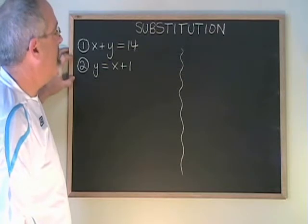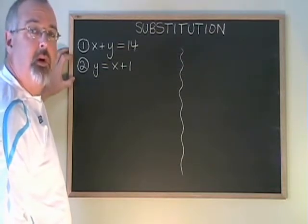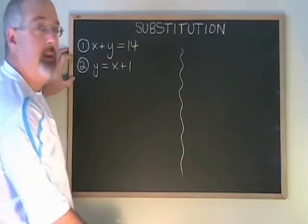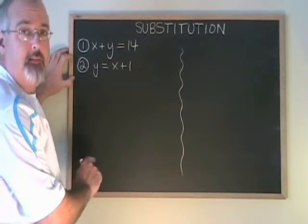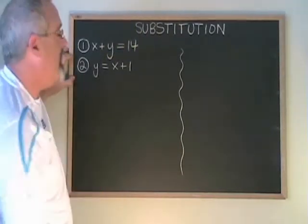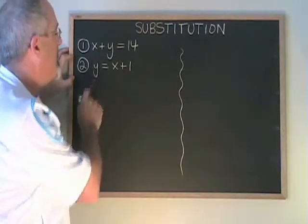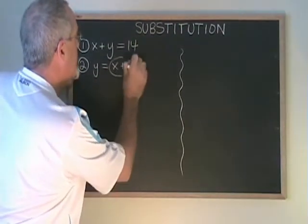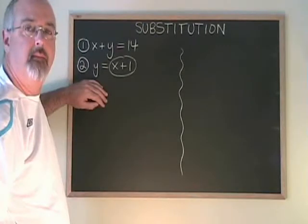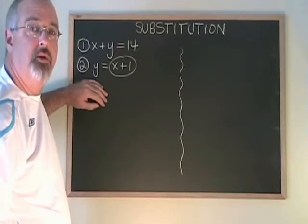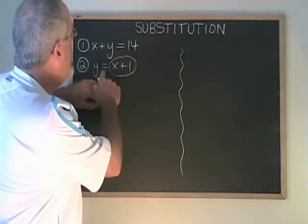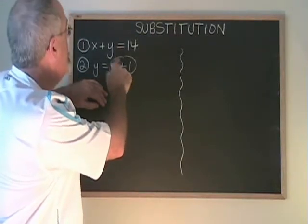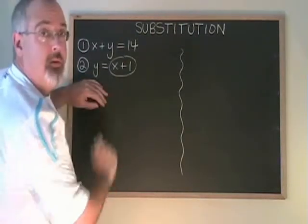In order for substitution to work, we have to isolate one of the variables in one of the equations. And this time we're lucky. In equation 2, we have y equals x plus 1. The y is already isolated. We know y is equal to this. The logic of substitution is that if y is equal to this in one equation, the y in the other equation is also equal to this.